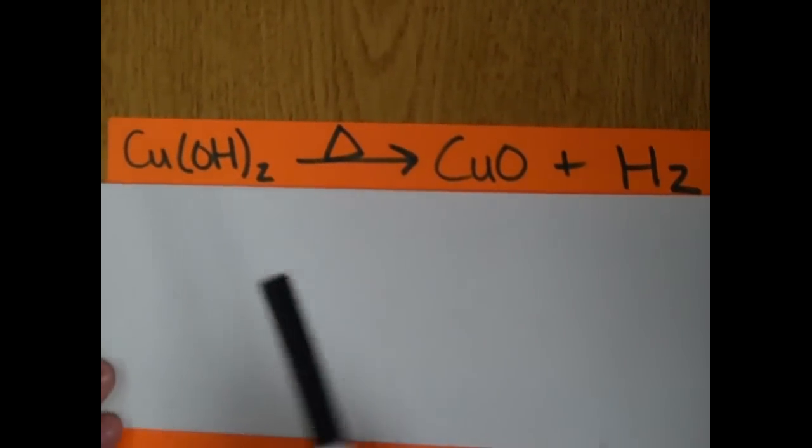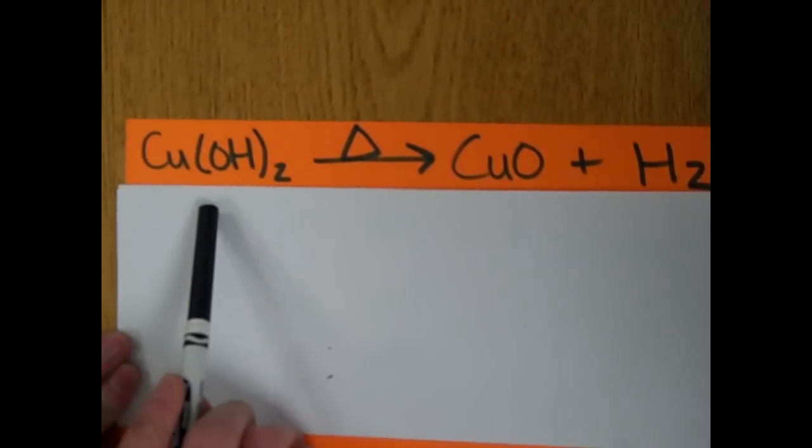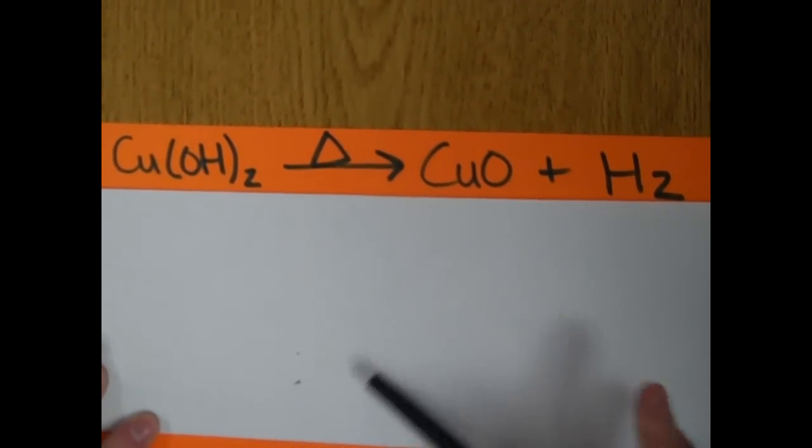In the next equation, we will be taking the copper hydroxide and heating it to change it to copper oxide and hydrogen.